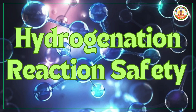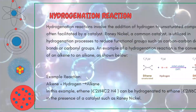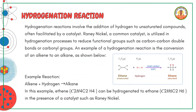Today, we'll be discussing the safety protocols for hydrogenation reactions. Hydrogenation reactions involve the addition of hydrogen to unsaturated compounds, often facilitated by a catalyst. A common catalyst used in these reactions is Raney-nickel, which helps in reducing functional groups such as carbon-carbon double bonds or carbonyl groups. An example of a hydrogenation reaction is the conversion of an alkene to an alkane, as shown below.